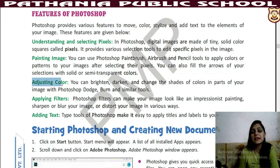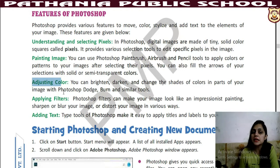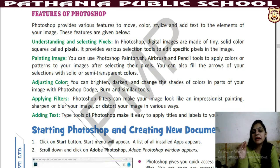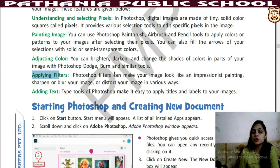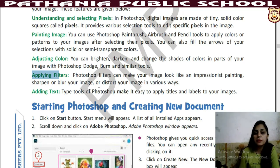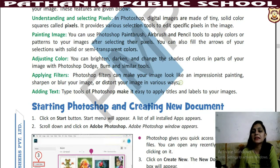The next feature is adjusting color — we have to adjust the color: brighten, darken, and change the shades of colors in parts of your image. With Photoshop's Dodge, Burn, and similar tools, you can do this. For example, if your pic was taken at night and it is dark, we can make it a little bright with these tools. Then we have applying filters — Photoshop filters can make your image look like an impressionist painting, sharpen or blur your image, or distort your image in various ways. You can blur it, clear it, or half-blur it — in any way you want to apply filters, you can easily do so.